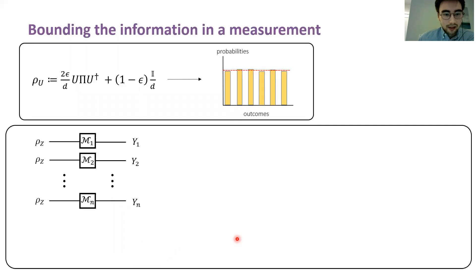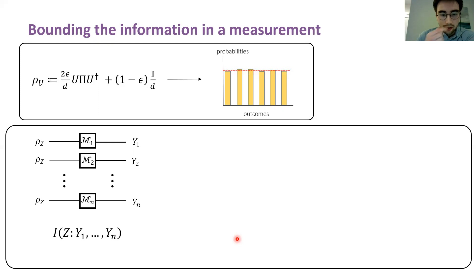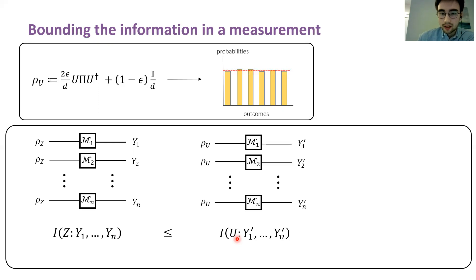For the upper bound, this brings us back to our choice of states. Why did we choose them of this form? The probabilities of the different outcomes from performing a measurement on this state won't look like random noise if the state is very close to being completely mixed, so one might guess that the measurements won't be very informative. Consider the setup where you're preparing n copies of a random state according to the random choice Z. You can consider the mutual information between the random variables.